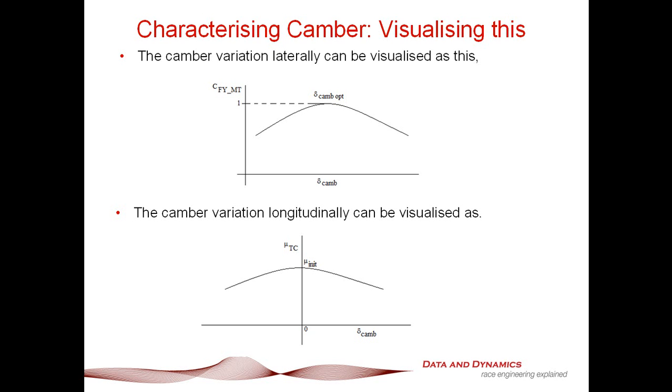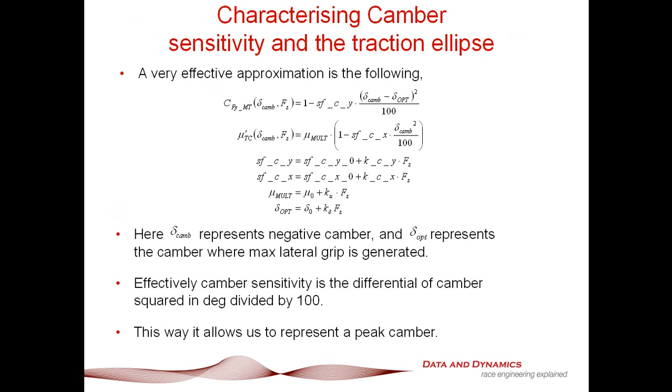So the whole idea is that, just going back here, is that basically our delta optimum is that camber at which we are generating peak lateral grip. I cannot state that clearly enough.